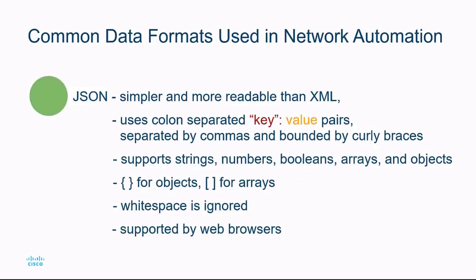JSON is simpler and more readable than XML. It uses colon-separated key-value pairs, where the key is surrounded by quotes. JSON objects are separated by commas and bounded by curly braces. The objects can support strings, numbers, booleans, arrays, and other objects. Objects are surrounded by curly braces, and arrays are surrounded by brackets. Whitespace is ignored, and JSON, like XML, is supported by web browsers.